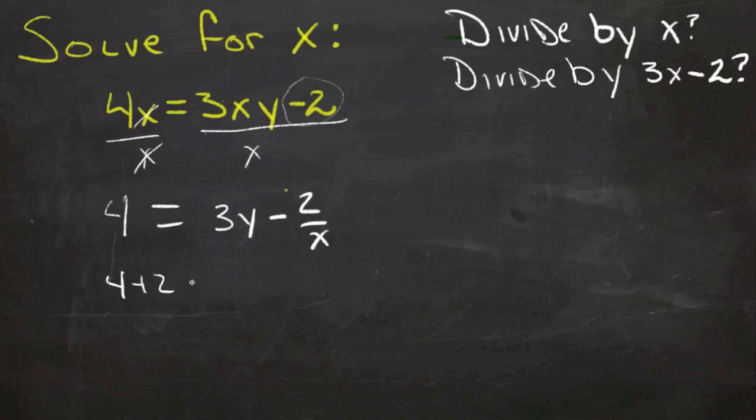We'd have 4 plus 2 over x, 4 plus 2 over x equals 3y. We're getting a lot closer to solving for y than we are solving for x.